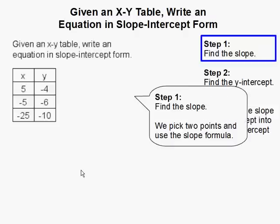The first step we're going to do is to find the slope. We're going to use the slope formula y2 minus y1 over x2 minus x1. I'm going to select two points to be my values for the formula.